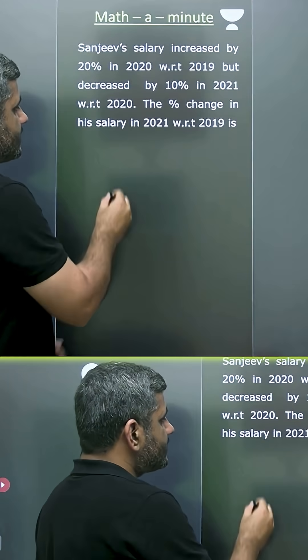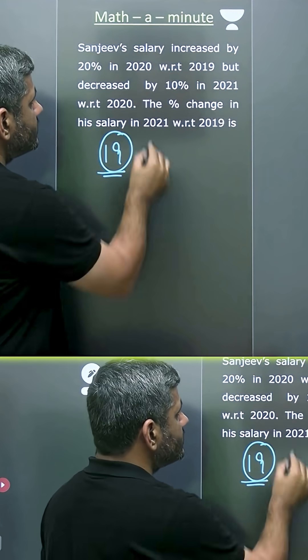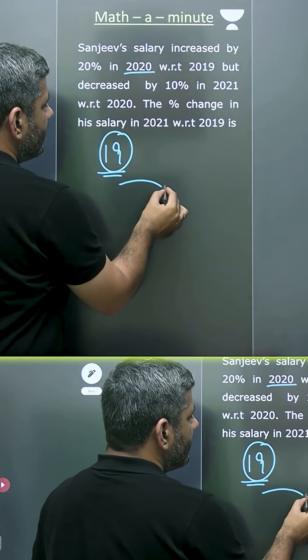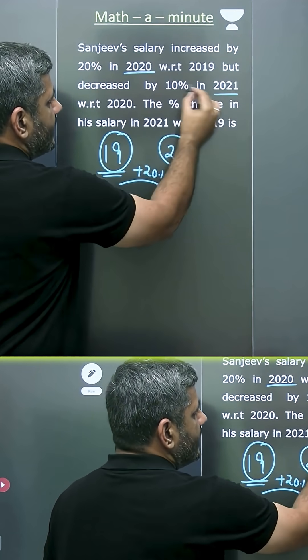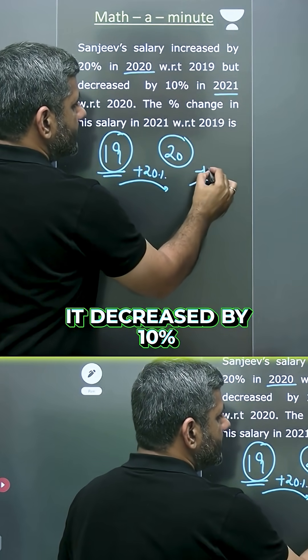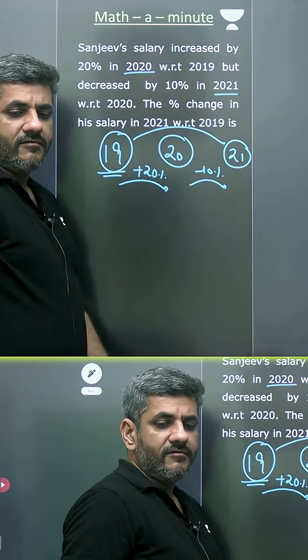Let me show you an example. Sanjeev's salary in 2019 - we don't know what it was. But in 2020, it increased by 20%, and in 2021, it decreased by 10%. The question is: in 2021, what is the percentage change with respect to 2019?